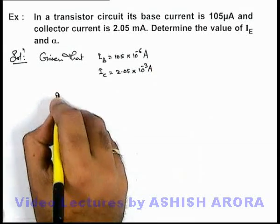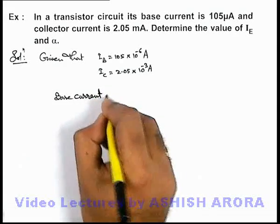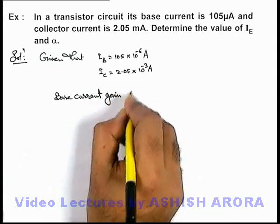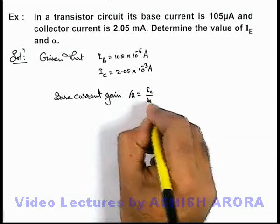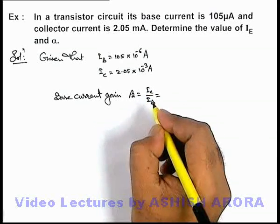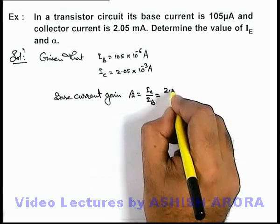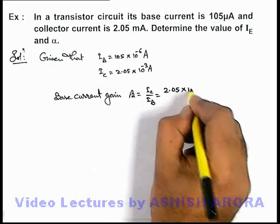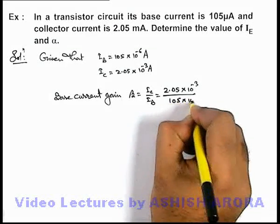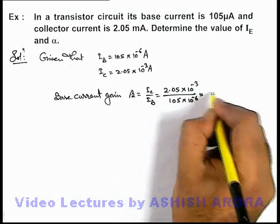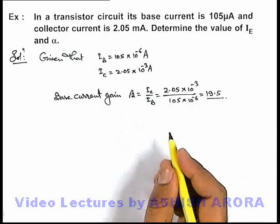We can simply get the value of the base current gain, which is denoted by beta and given by the ratio of collector current to base current. Substituting the values: two point zero five into ten to the power minus three divided by one zero five into ten to the power minus six gives a value of nineteen point five. You can verify this on calculation.